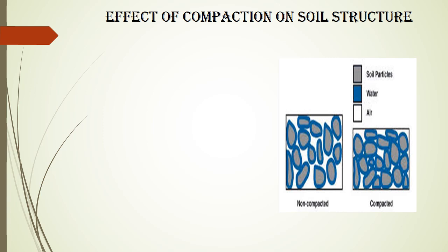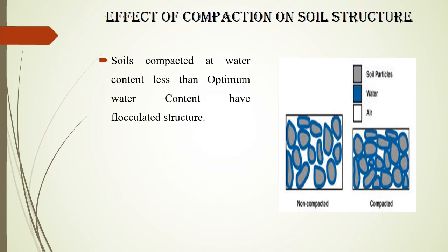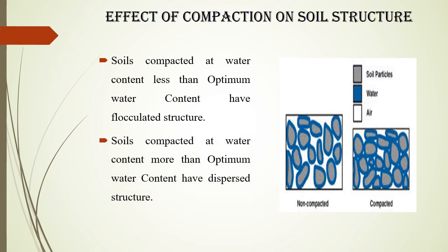First, the effect of compaction on soil structure. Soils compacted at water content less than the optimum water content usually have a flocculated structure, and soils compacted at water content more than the optimum water content have a dispersed structure.